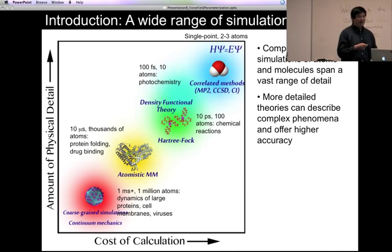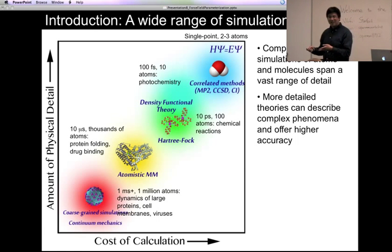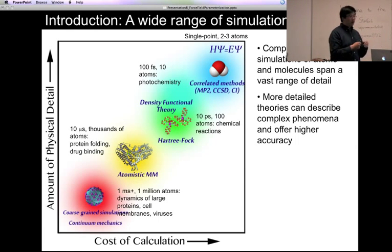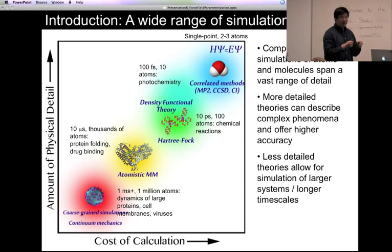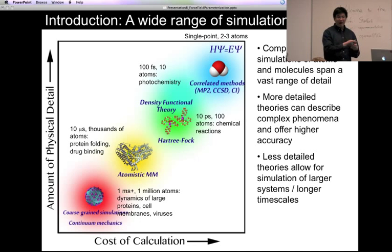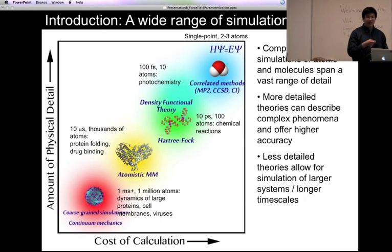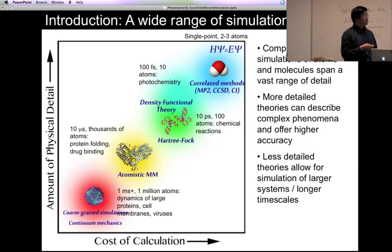There are many definitions for accuracy, and we are always searching for the simplest essential description of our system, because that is going to enable us to run rapid and accurate simulations. That's kind of our end goal in designing good force fields.